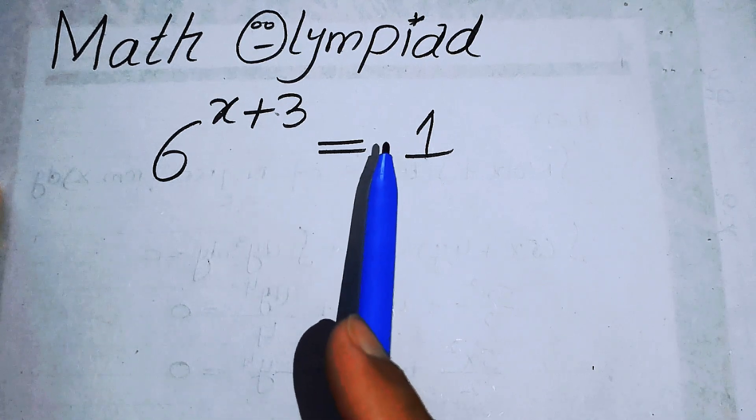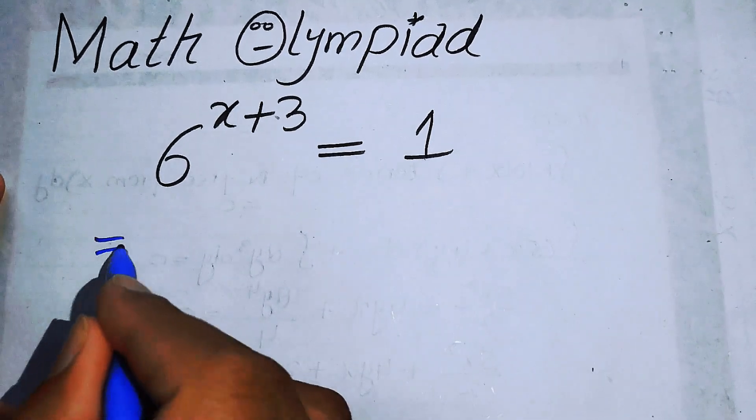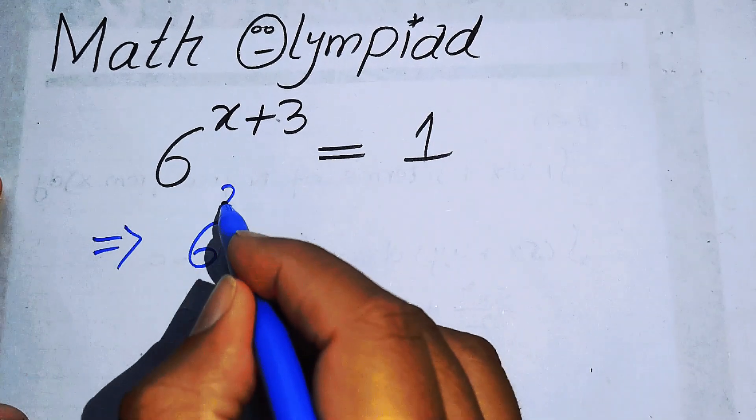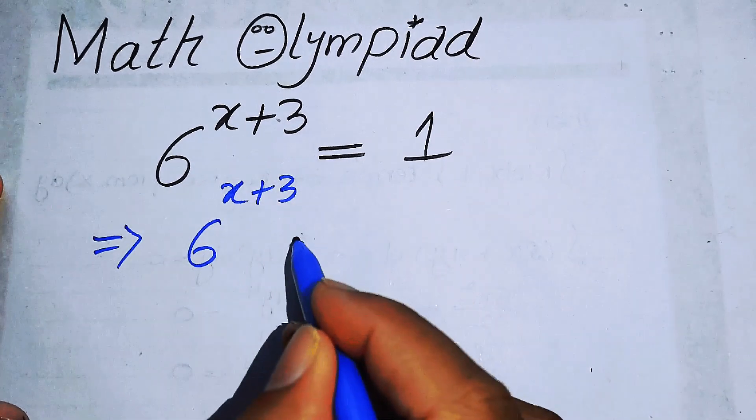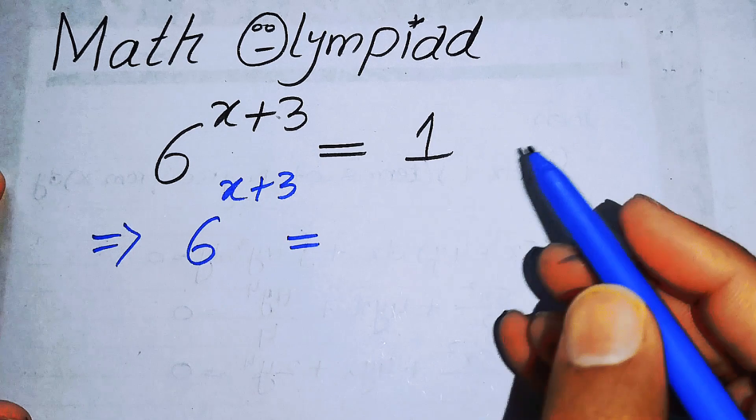Focus on the right-hand side. Here you have 1, and we can write this one as 6 to the power of x plus 3 equals... Here you know that an important exponent law...